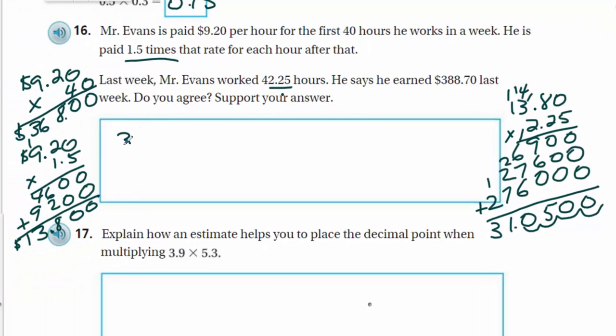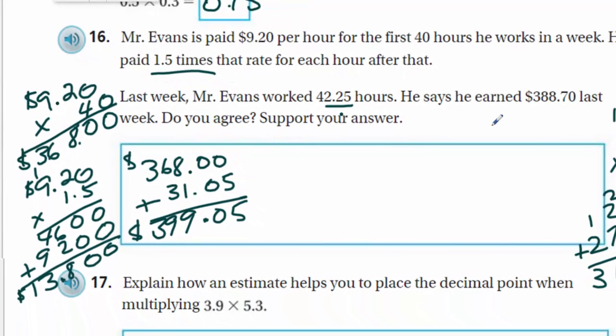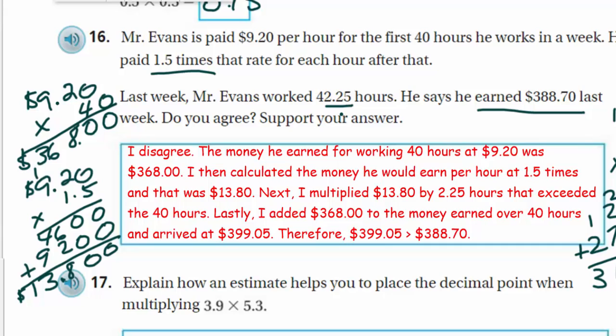So we need an additional $31.05. Now what we need to do is we need to take our $368 and we're going to add that with our $31.05. We add that together. Bring the decimal straight on down. So I'm getting $399.05. So based on these numbers, I'm going to say no, I do not agree. I do not agree because Mr. Evans says that he earned the $388.70. As you can see, this was a very multi-step problem. That's all my work. Let's move on.